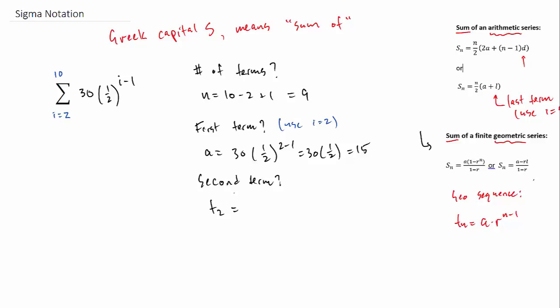We should check our second term as well, which means we'll use i equals 3. When we plug that in, we're going to get 30 times a half to the power of 2, which is going to give us 30 times a quarter. And in lowest terms, that would be 15 over 2, or you could say 7.5.